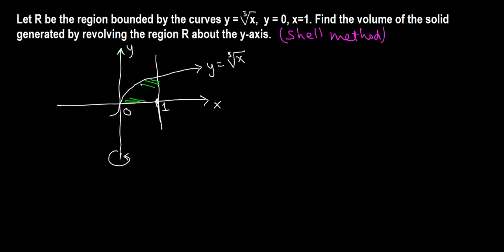In disk or washer method we have to take rectangles perpendicular to the y-axis if we are revolving about the y-axis. But in shell method we have to take them parallel.